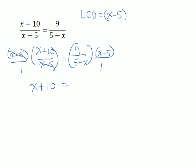On the right-hand side, x minus 5 and 5 minus x are opposites. These multiply out to give us negative 1, and 9 times negative 1 gives us negative 9.